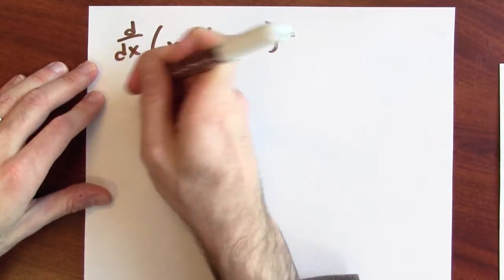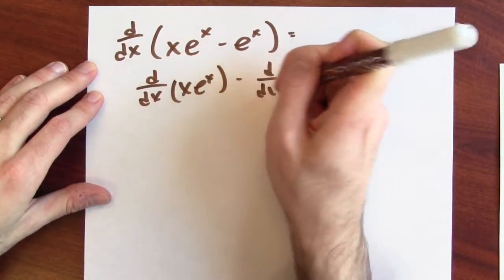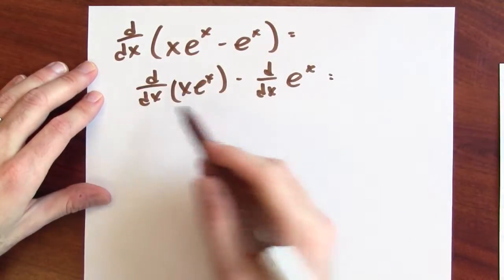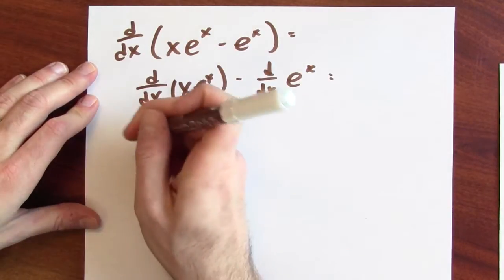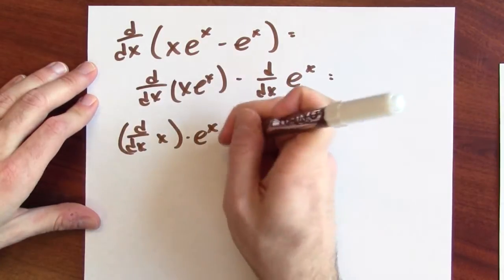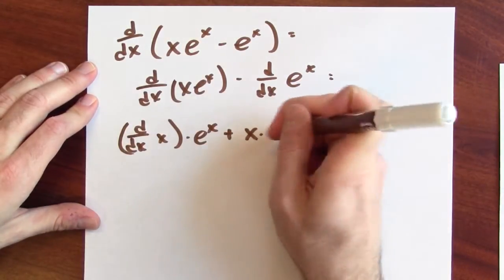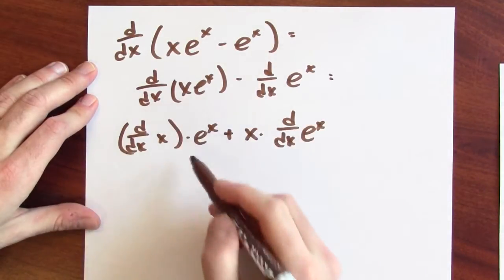All right, this is a derivative of a difference. So, it's the difference of the derivatives. But now, this is the derivative of a product. So, I'm going to use the product rule. I'm going to take the derivative of the first, the derivative of x times the second plus the first times the derivative of the second. All right, that's the product rule.